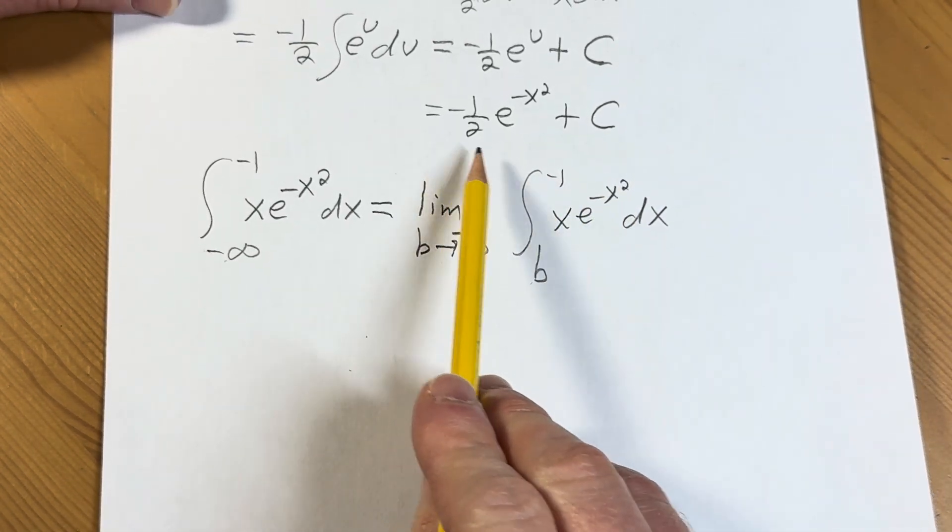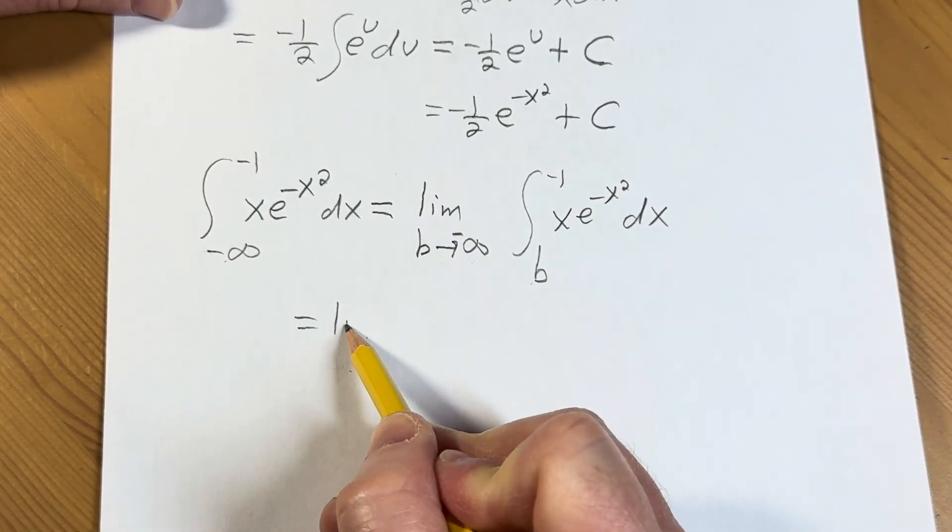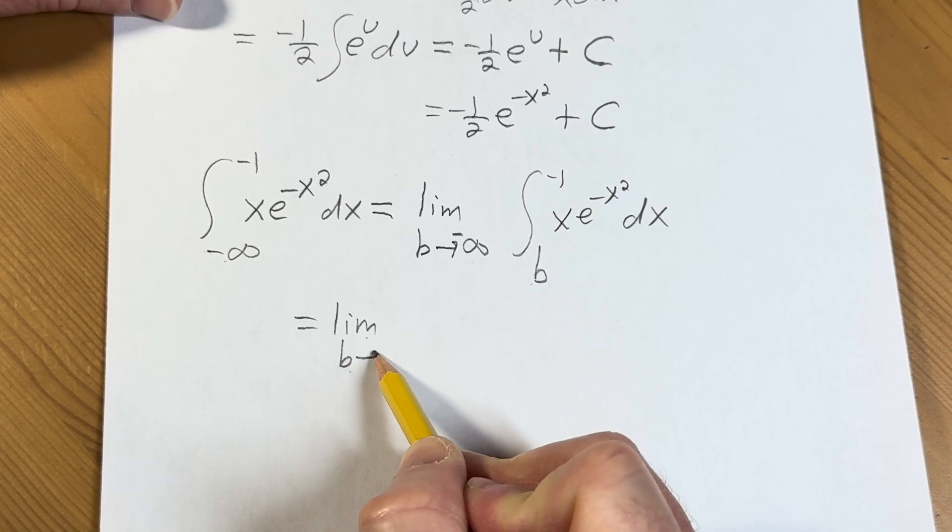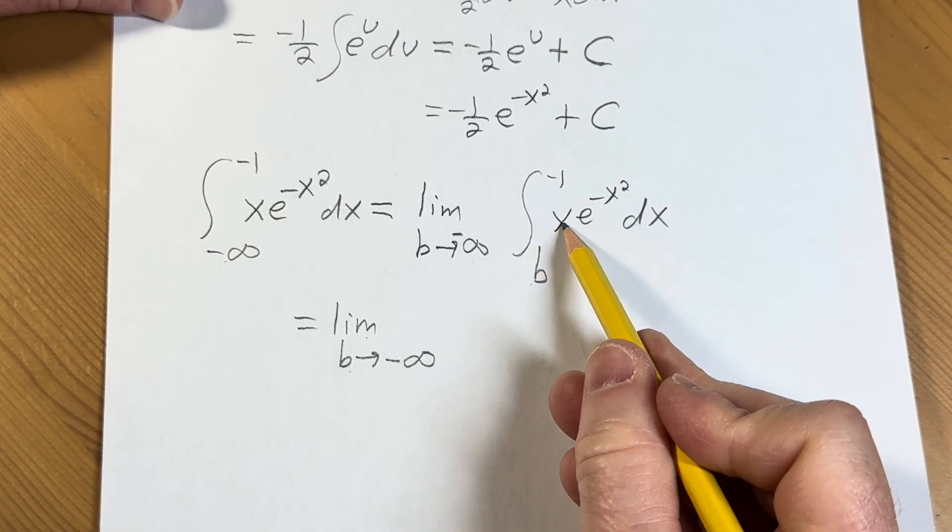All right. Now we're going to go ahead and integrate this. We know the answer. So this is equal to the limit as b approaches negative infinity. Integrating this,